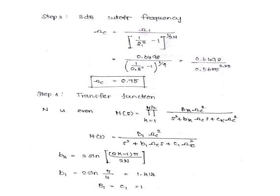Step 3: Cutoff frequency. We are going to calculate the cutoff frequency Ωc = Ω₁ / [(10^(0.1αp) - 1)]^(1/2N). By substituting this value, cutoff frequency Ωc = 0.75.